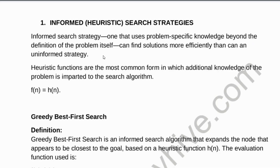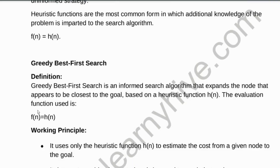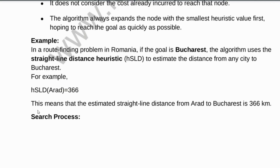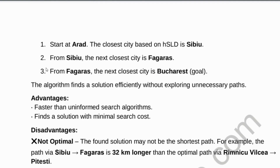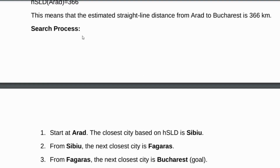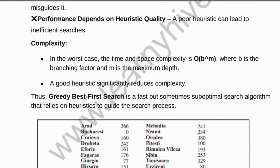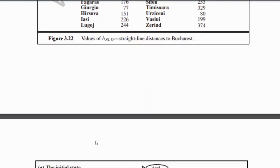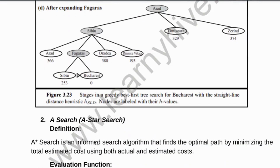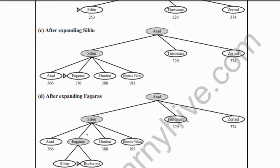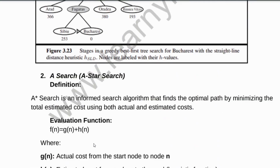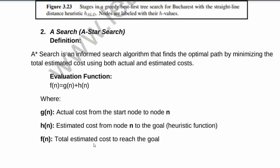Starting with the first question of module 3: informed heuristic search strategies. You start by explaining its definition, working principle, and example. After that, explain the search process, its advantages and disadvantages, along with its complexity and all the diagrams. Explanation of this question and every question in this module is given — click on the link in the description below to access our platform.